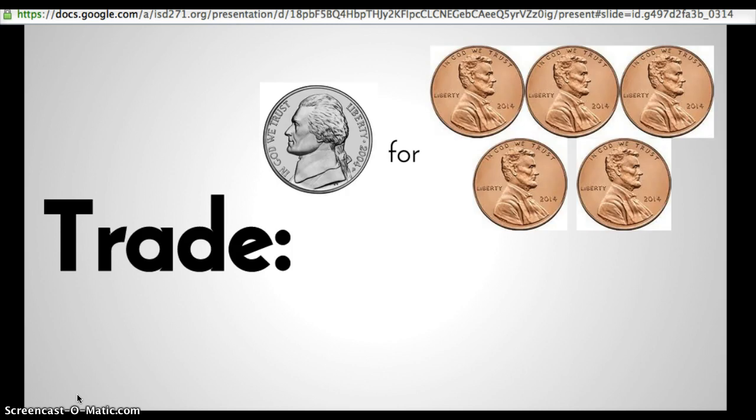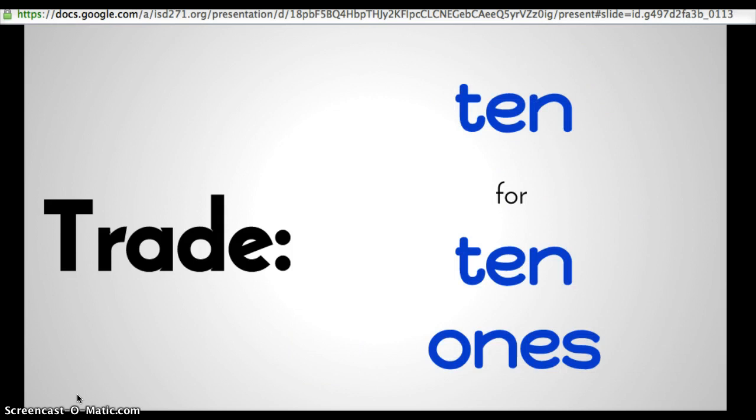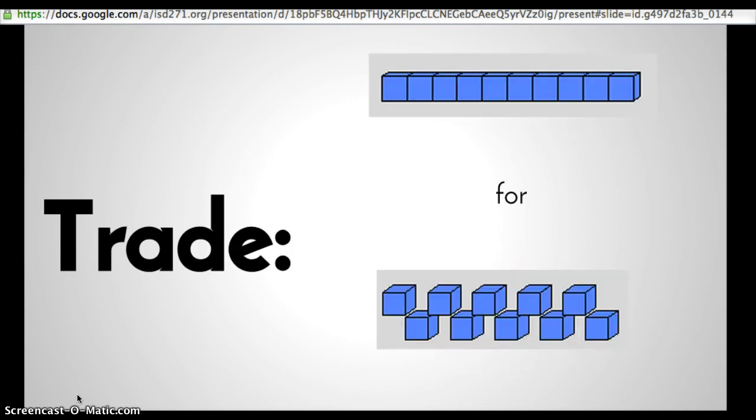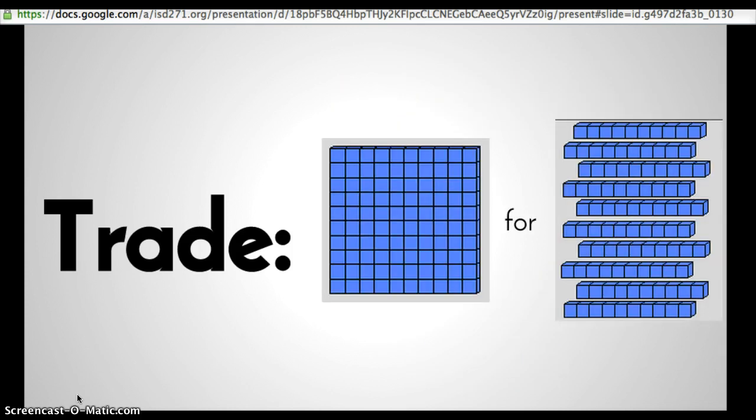you could do something like one nickel for five pennies. That would be an equal trade. Or if you're using money, you could also think of a dime for two nickels. That would also be an even trade. Trading can also happen when you take a ten and trade it for ten ones. That might look something like this. You could even take a hundred and trade it for ten tens. That might look something like this.